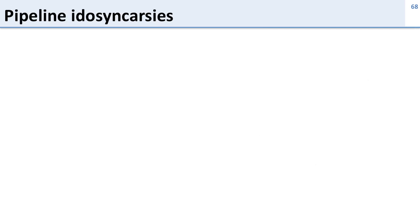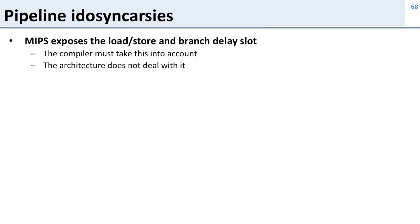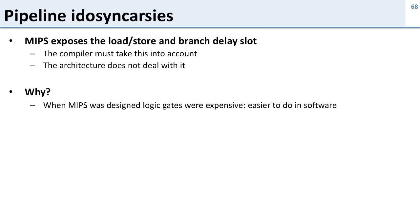Let's talk about some idiosyncrasies of pipelines. We've seen how MIPS exposes the load/store and branch delay slots, which means the compiler has to take them into account and the architecture does not deal with it. This is a design decision — the people who designed MIPS decided explicitly that the processor was not going to take care of this. When MIPS was designed, logic gates were expensive and they didn't have many transistors, so they felt this was easier to solve in software than in hardware.